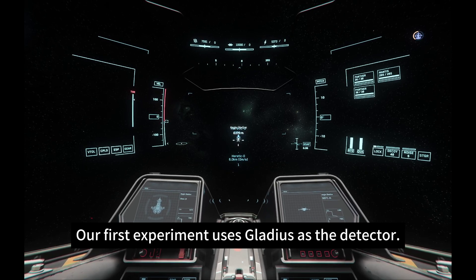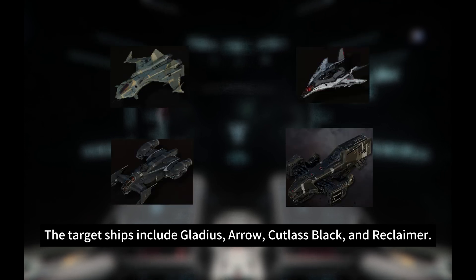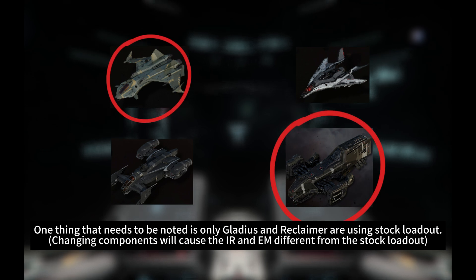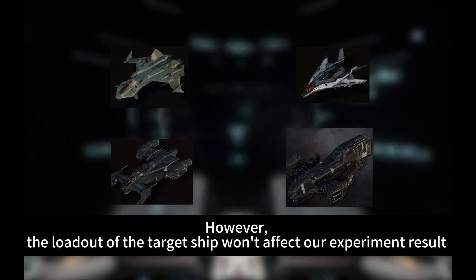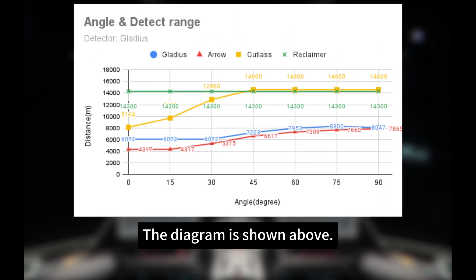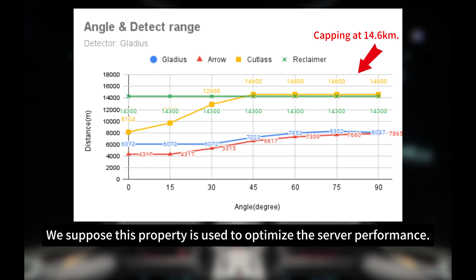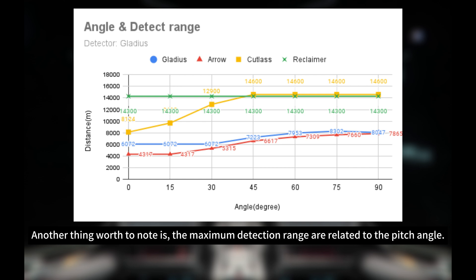Our first experiment is using Gladius as the detector. The target ships include Gladius, Arrow, Cutlass Black, and Reclaimer. One thing that needs to be known is only Gladius and Reclaimer are using stock loadout. However, the loadout of the target ship won't affect our experiment results since we are focusing on the relationship between max emission value and detection range. The diagram is showing above. The first thing we can notice is the maximum detection range is capped at 14.3 to 14.6 km. We suppose this property is used to optimize the server performance.